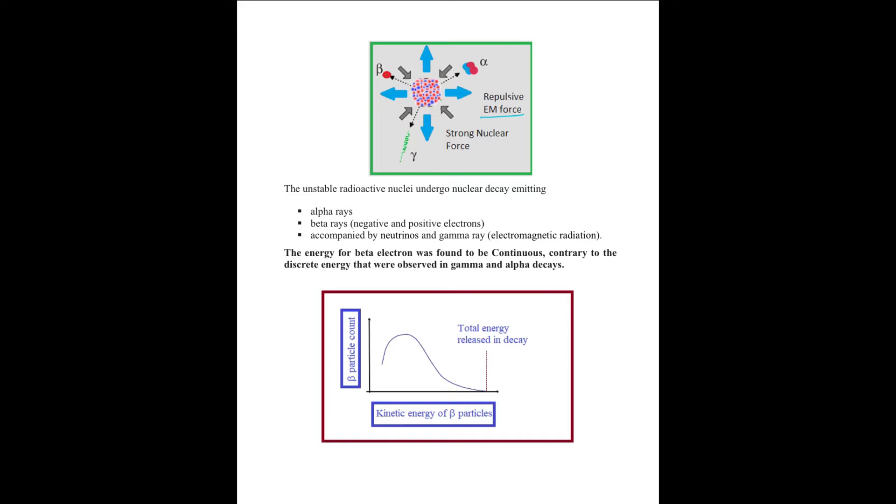The unstable nuclei undergo nuclear decay emitting alpha particles, beta particles, gamma, and neutrinos are also emitted during the beta decay. The energy for the beta electron was found to be continuous, contrary to the discrete energy that we observed in case of gamma and alpha decays.